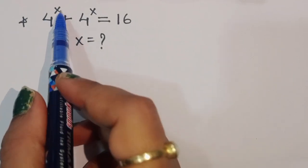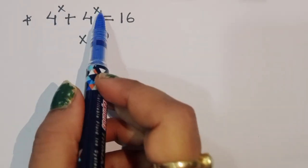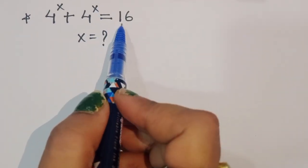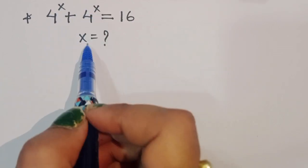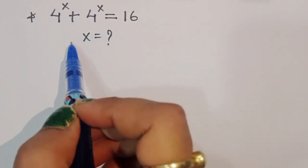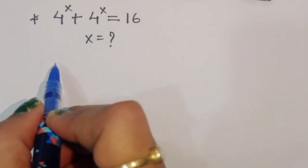The question is: 4 power x plus 4 power x is equal to 16. We have to find out the value of x. Let's see the solution.